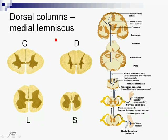The dorsal columns, which continue themselves with the medial lemniscus. These are fibers that bring information of epicritic touch, vibration, and conscious proprioception.